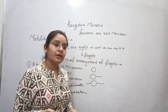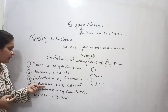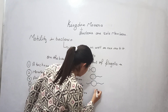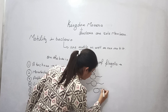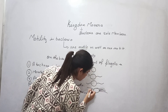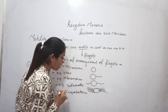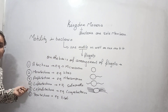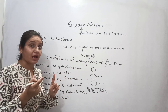Lophotrichous bacteria are bacteria having a bunch of flagella at both ends. An example is Salmonella typhi, the bacterium that causes typhoid.